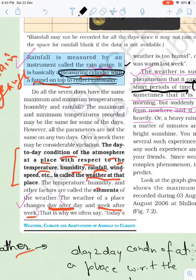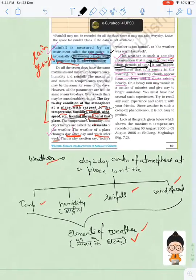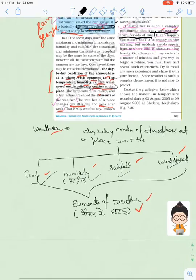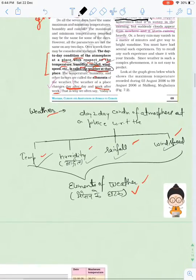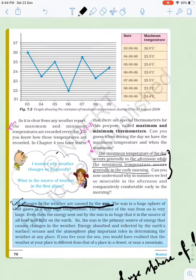The elements of weather are temperature, humidity, rainfall and wind speed. These are called elements of weather. This is a day-to-day changing phenomenon. In the previous chapter we studied maximum and minimum thermometers, types of thermometers.